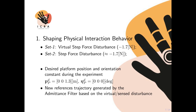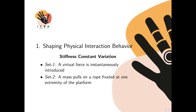In all experiments, the equilibrium pose for the platform in the absence of external disturbances was at 1.28 meters height with zero orientation. In the first set of comparisons, the focus is on the stiffness constant to evaluate the behavior of the platform at steady state.